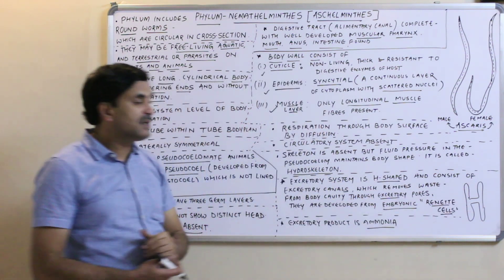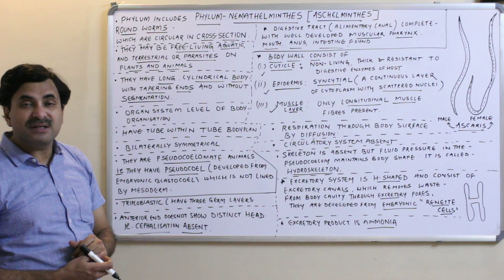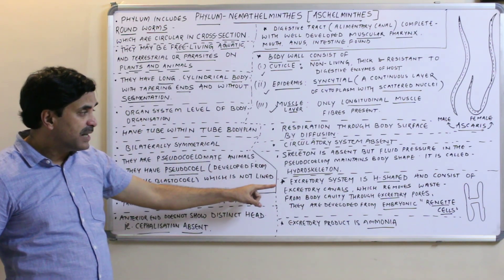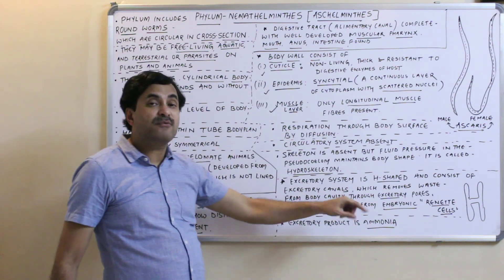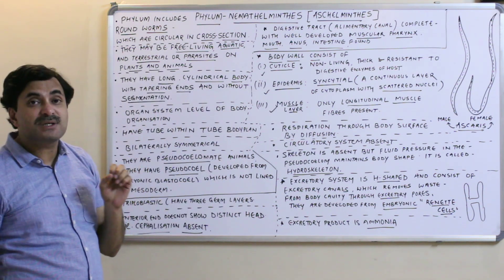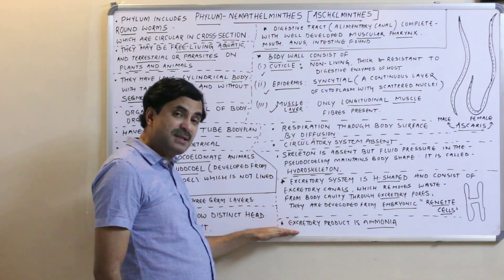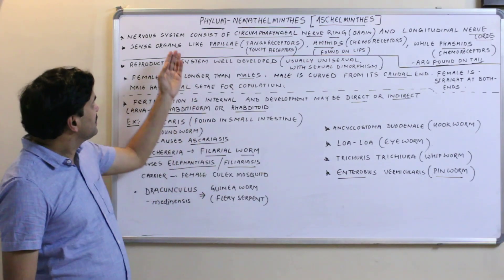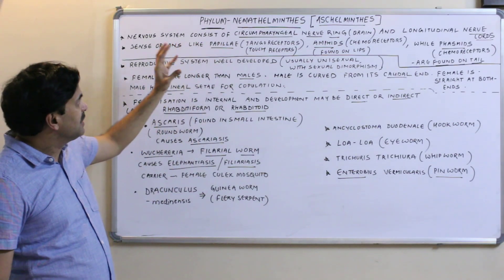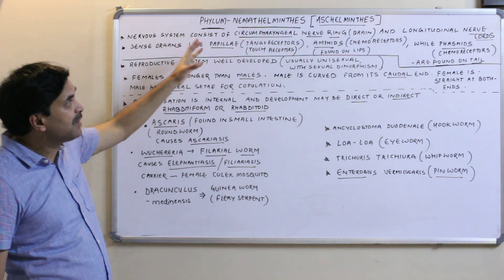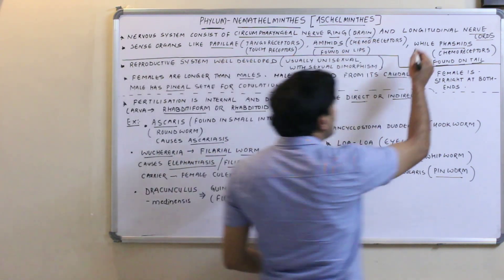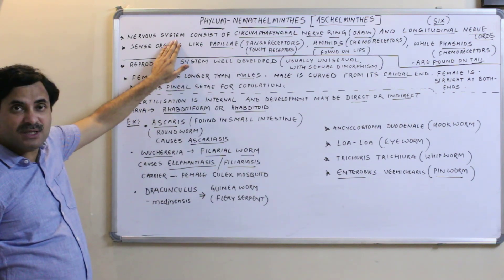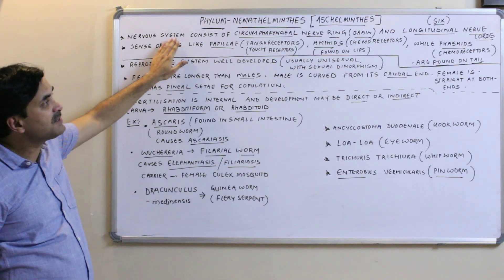The excretory system is H-shaped, consisting of excretory canals also called protonephridia, which remove body waste through excretory pores. These canals are developed from special embryonic cells called rennet cells, and the excretory product is ammonia. The nervous system consists of a circumferential nerve ring (the brain) and six longitudinal nerve cords.